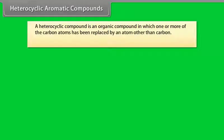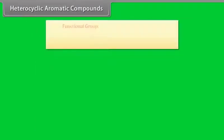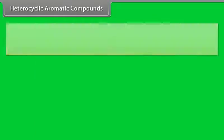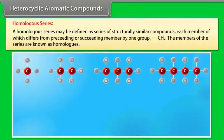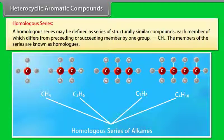Heterocyclic aromatic compounds: a heterocyclic compound is an organic compound in which one or more carbon atoms have been replaced by an atom other than carbon. Typical heteroatoms are nitrogen, oxygen, and sulfur. A functional group is a specific group of atoms in a molecule responsible for the chemical reactions of that molecule. A homologous series is a series of structurally similar compounds where each member differs from the preceding or succeeding member by one CH2 group; the members are known as homologs.